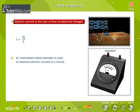Electric current is the rate of flow of electrical charges. That is, I equals Q by T, where I is the electric current, Q the electric charge, and T is the time taken.